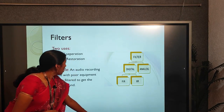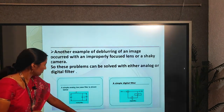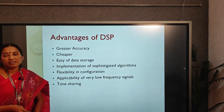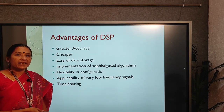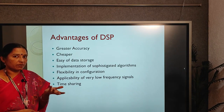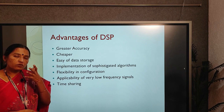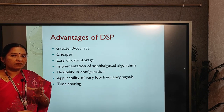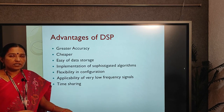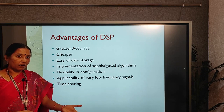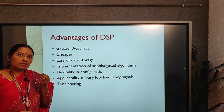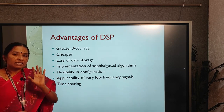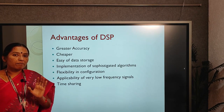The advantages of DSP: DSP has greater accuracy compared to analog signal processing (ASP). Whenever we use an analog signal processor, it is made up of analog components like filters, capacitors, and resistors, which have some tolerance that affects accuracy. In digital systems, we use only multipliers, adders, and memory elements, so the digital signal processor has greater accuracy.